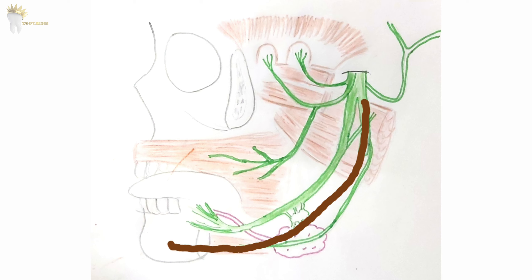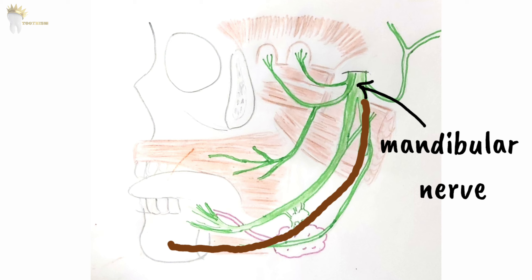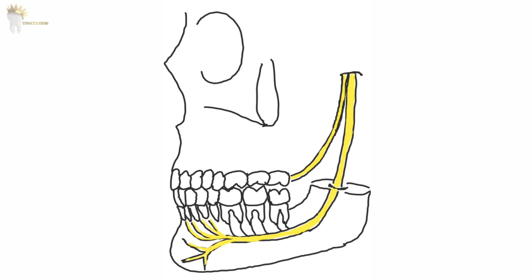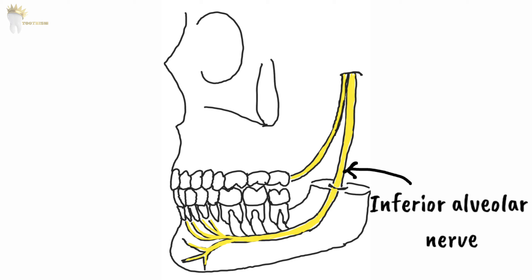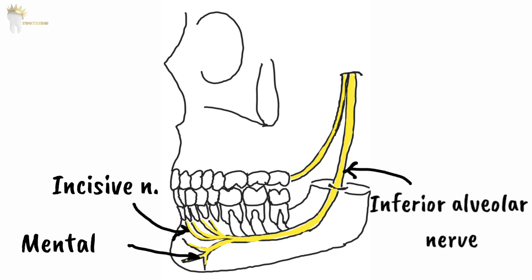The inferior alveolar nerve is a branch of the posterior division of the mandibular nerve. To understand the anatomy you can watch the linked video. In the inferior alveolar nerve block, the nerves that get anesthetized are the inferior alveolar nerve, the incisive nerve, the mental nerve — both branches of the inferior alveolar nerve — and the lingual nerve.